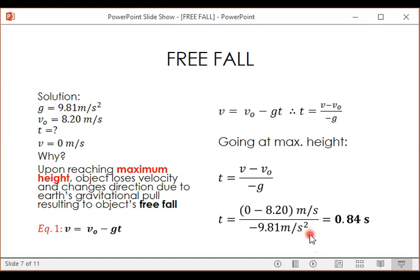So we'll get an answer of 0.84 seconds. Okay, I hope that's clear. So you can see, it's almost the same as UAM. The only difference is that uniformly accelerated motion is horizontal while this freefall is vertical displacement.